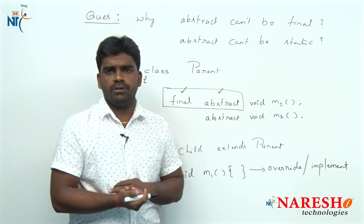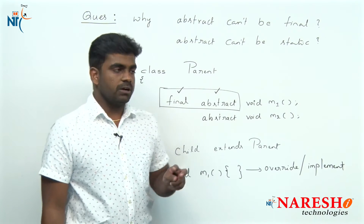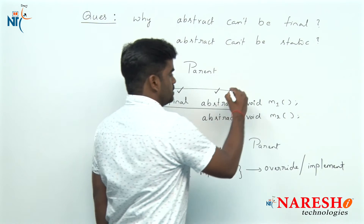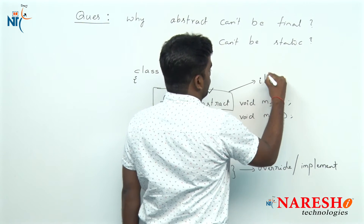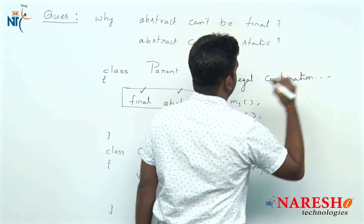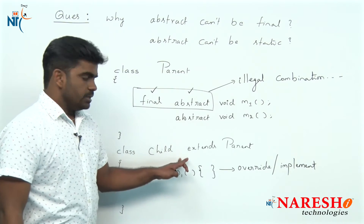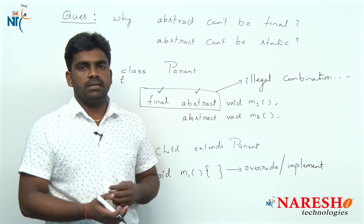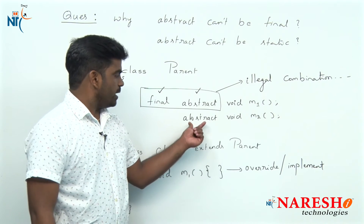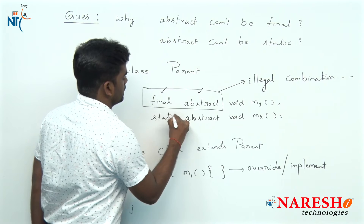In interviews they may also ask: tell me one illegal combination of modifiers in Java. You can say final and abstract is an illegal combination of modifiers. So final and abstract is clear — now the more confusing question: why can we not declare an abstract method as static?